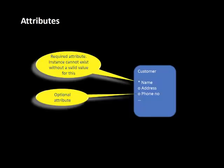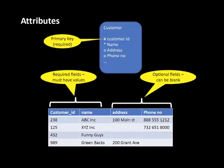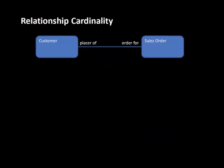For example, every customer in our system must have a name, may have an address, may have a phone number, etc. I gave you an example of required and optional attributes: in the table, all rows have values for required attributes, whereas some rows are missing values for optional attributes — just to make the concept clear.